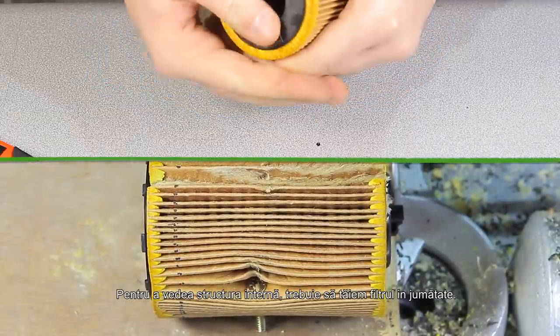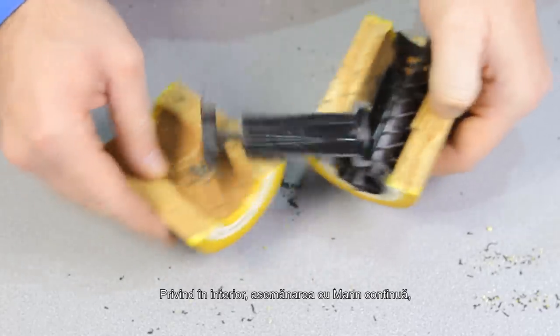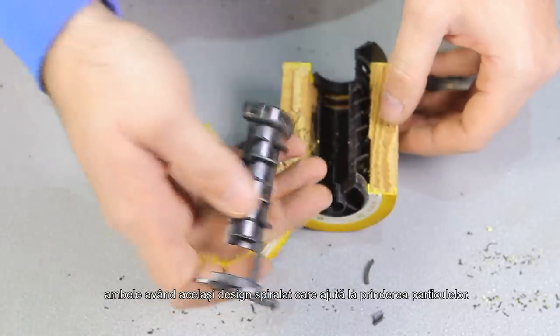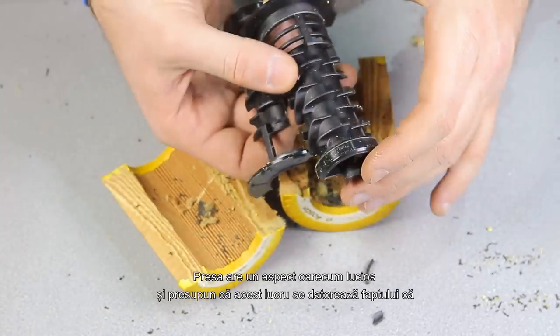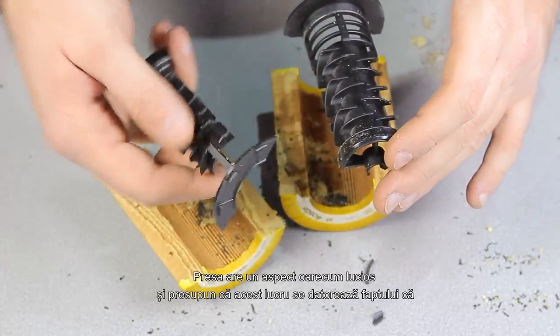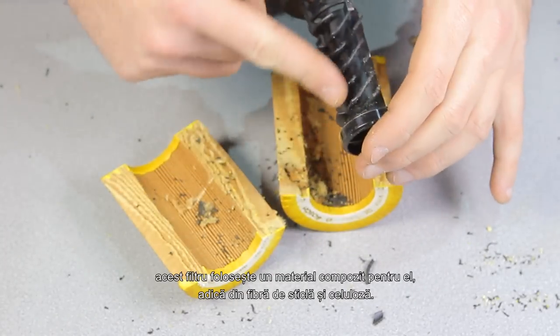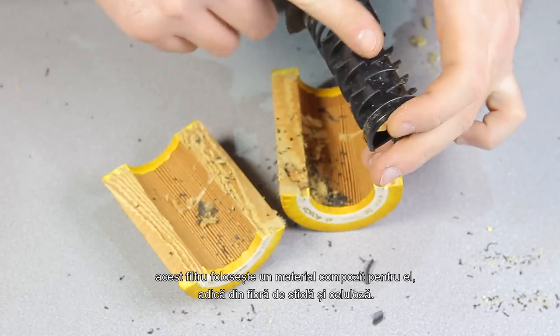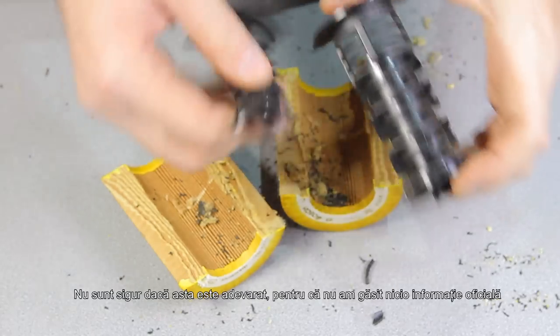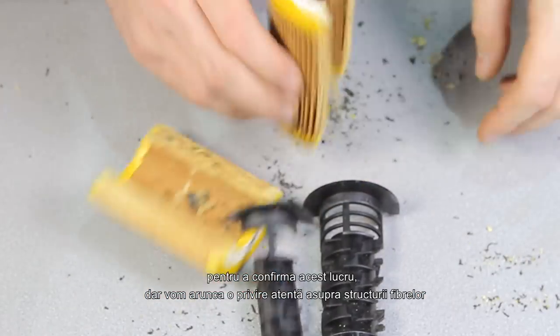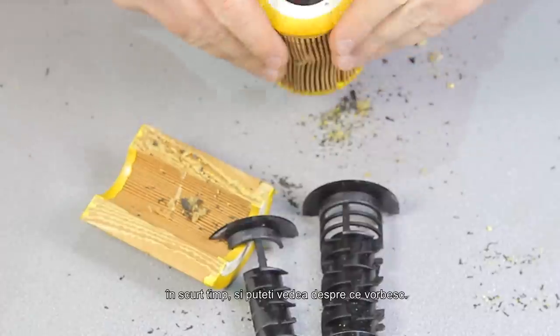In order to see the internal structure we need to cut it in half. Looking inside, the resemblance to Mann continues, both having the same spiral fin design that helps trap particles in the media. The media has a somewhat glossy appearance and I presume that this is because the filter uses a composite material made out of fiberglass and cellulose fibers. I'm not sure if this is the case because I could not find any official information to confirm this.